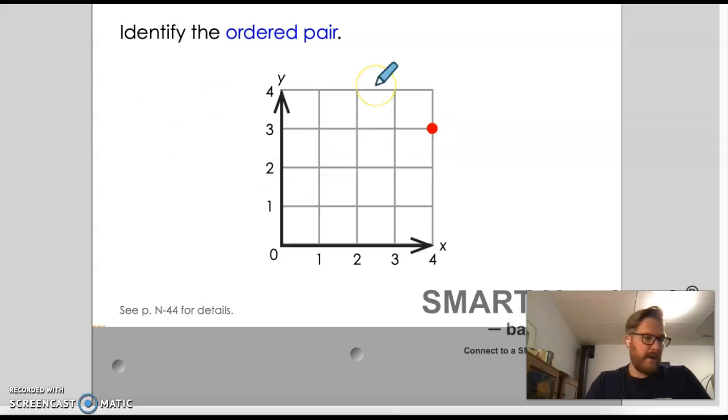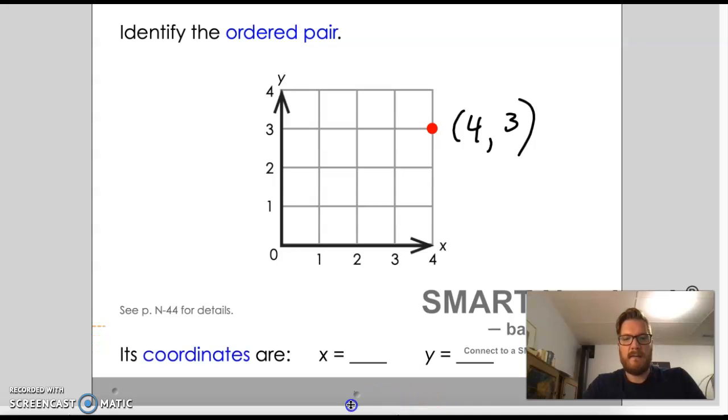Now we move on from there, and we identify there's a dot over here, and we can identify this ordered pair. The first thing we have to do is figure out how far over to the right or how far away from zero along it is. We would say that this is four units over, and then from there it's up one, two, three. So our ordered pair is four, three. Four to the right, three up.